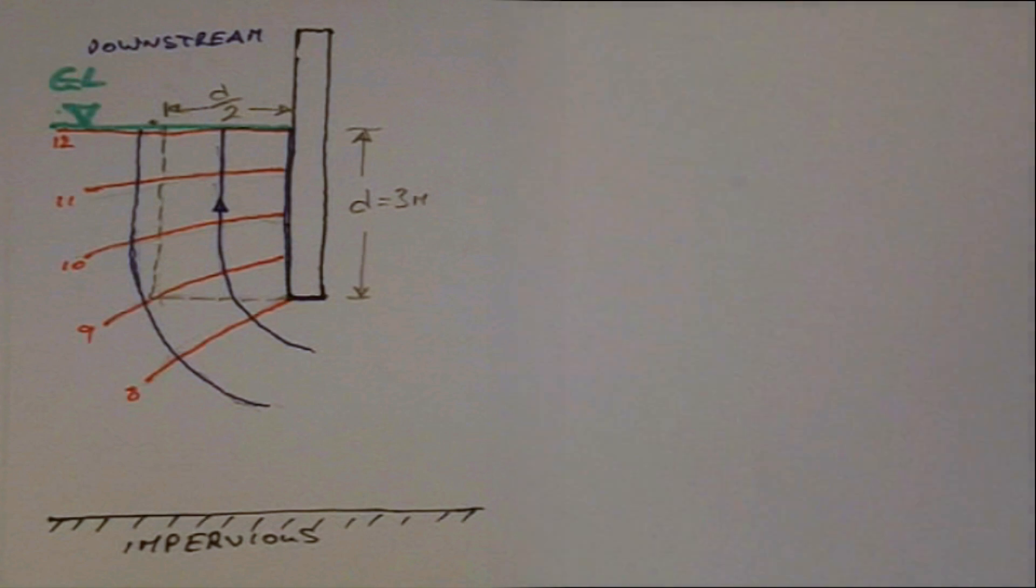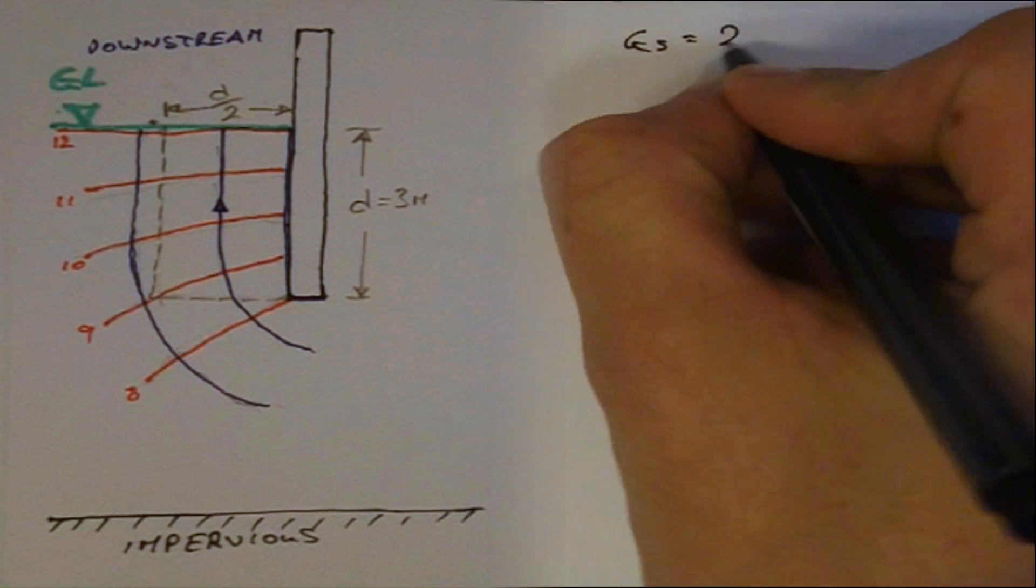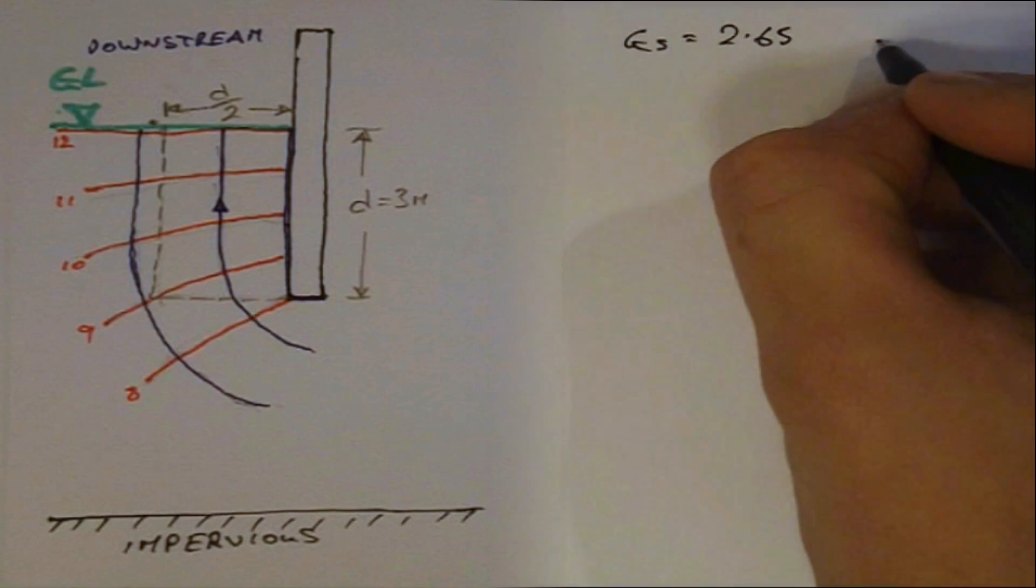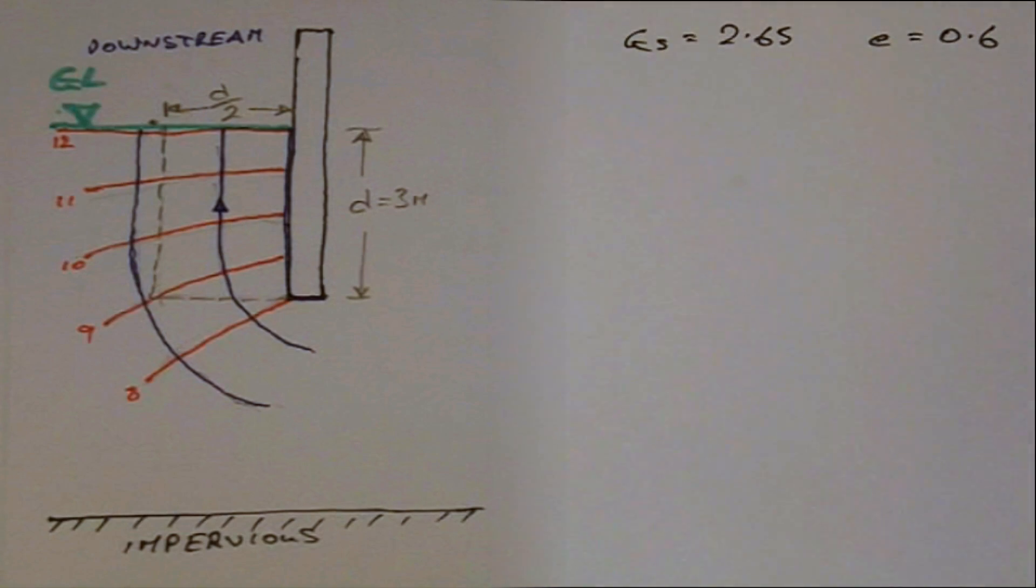Let's do a worked example involving both boiling and piping calculations. The specific gravity and voids ratio for the soil supporting the sheet pile wall shown are 2.65 and 0.6 respectively. We want to determine the factor of safety against boiling and piping.